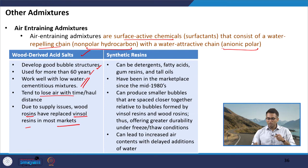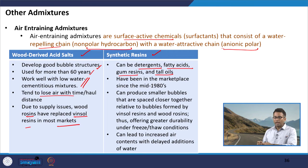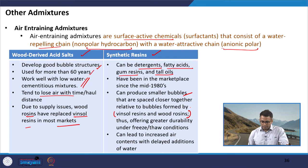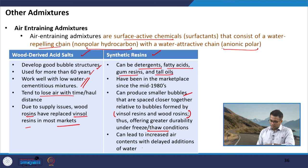Synthetic resins include detergents, fatty acids, gum resins, and tall oils. They can produce smaller bubbles spaced close together compared to those formed by wood-derived acid salts, and therefore offer greater durability, especially under freeze-thaw conditions. They can also lead to increased air content with delayed additions of water. These are some characteristics under both categories of air entraining admixtures.